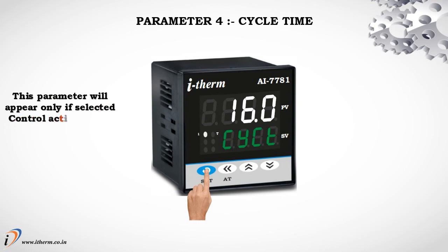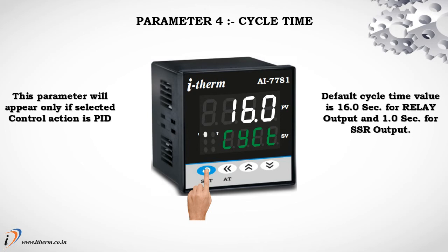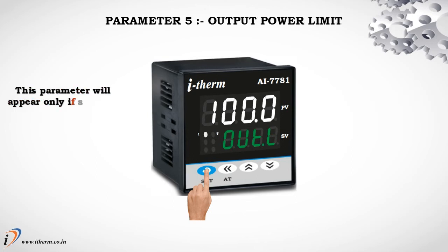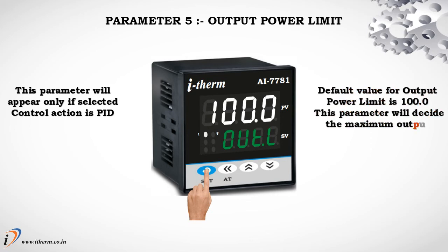Parameter 4 is Cycle Time. This parameter will appear only if the selected control action is PID. The default cycle time value is 16.0 seconds for relay output and 1.0 second for SSR output. Parameter 5 is Output Power Limit, which also appears only in PID mode. The default value is 100. This parameter decides the maximum output power in percent applied to the load.